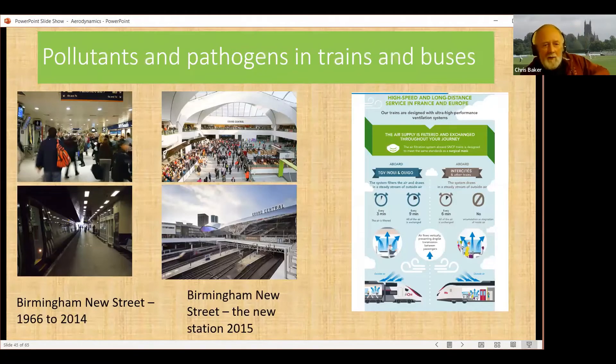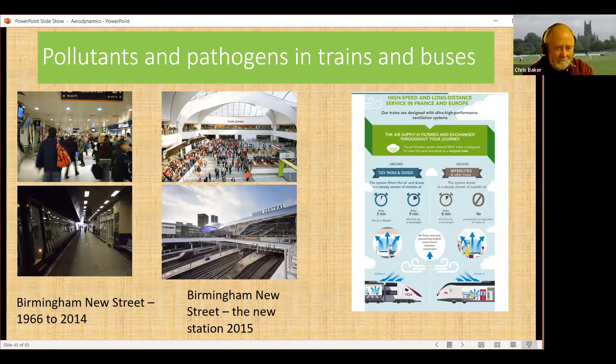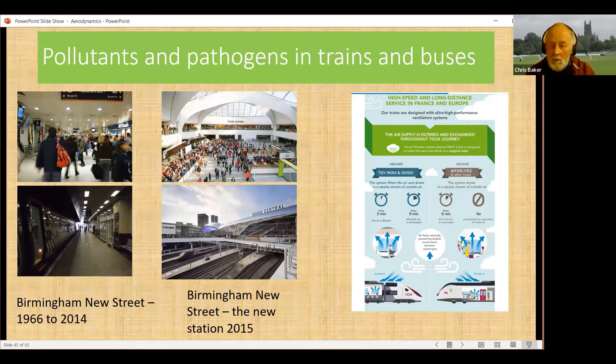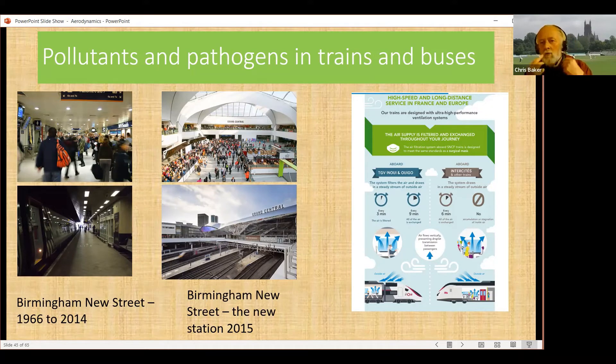So I'm coming on now to pollutants and pathogens on trains and buses. I've mentioned the station in Birmingham, New Street Station, 1966 to 2014. Effectively, a crowded underground station with diesel trains in it. That was quite horrible to be in. The atmosphere was really nasty. It was rebuilt in 2015. It's much more spacious now, but there are still diesel trains going through, and they wanted to do some work to work out how to improve the ventilation system. So we were called in to do some work on that.